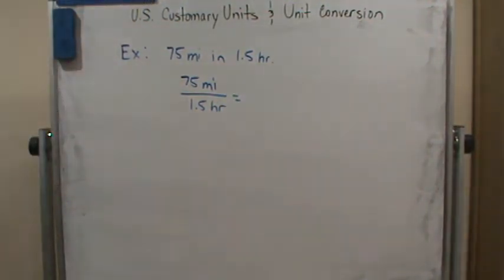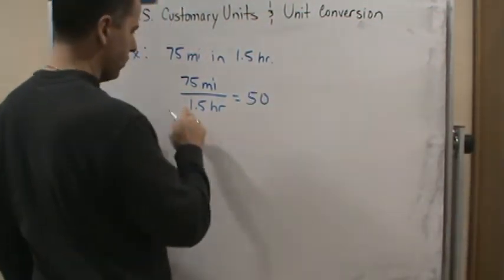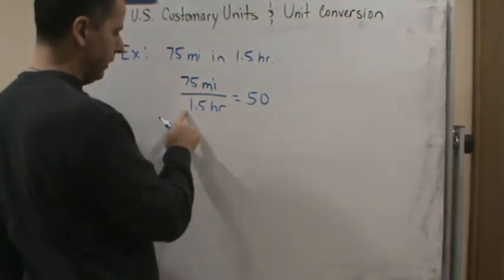Well, we just divide. So 75 divided by 1.5 gives us 50. So this is going to be 50.